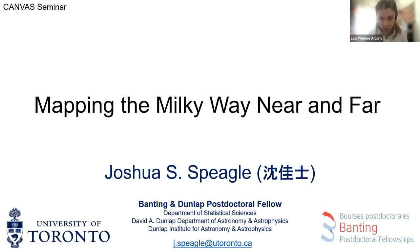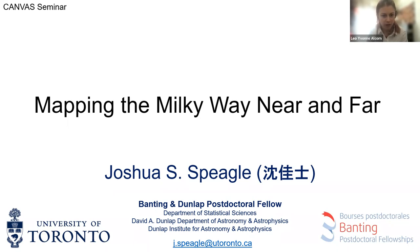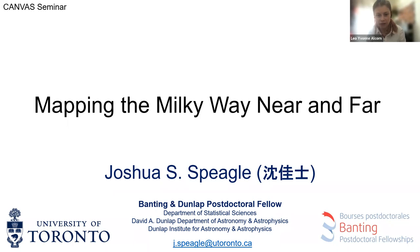Without further ado, I would like to introduce everybody to Dr. Spiegel. Josh obtained his BA in astrophysics and physics at Harvard University in 2015. After spending a year abroad at the Kavli Institute for Physics and Mathematics of the Universe at the University of Tokyo, he returned to Harvard where he obtained his MA and PhD in astronomy in 2020. He left Harvard for the University of Toronto, where he is now a Banting and Dunlap postdoctoral fellow. His research focuses on combining approaches from astronomy, statistics, and data science to understand how galaxies like the Milky Way form, behave, and evolve, often using large publicly available datasets that include millions of stars and galaxies.